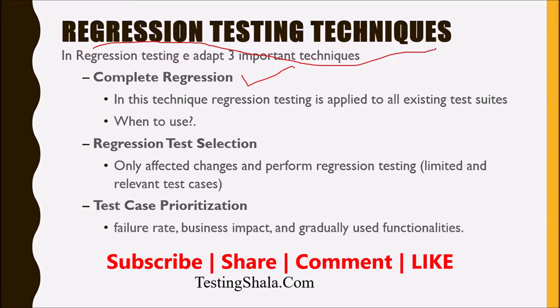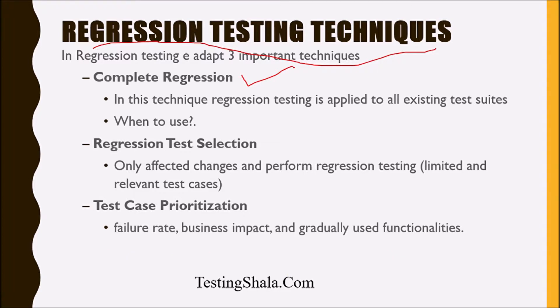Normally, this kind of technique we adopt when there is a major change to the code — when there is a major update to the functionality — that is where we should choose to run complete regression. You should pick the complete regression when there is a major change to the code. That is where you should define clearly when to use complete regression.